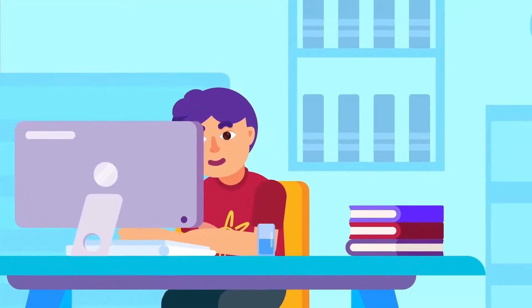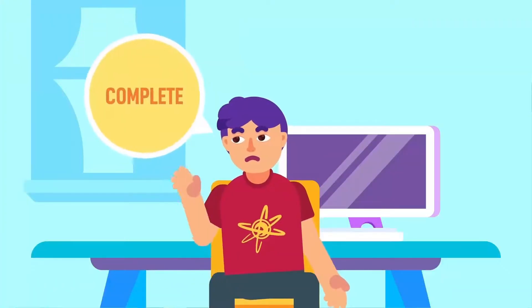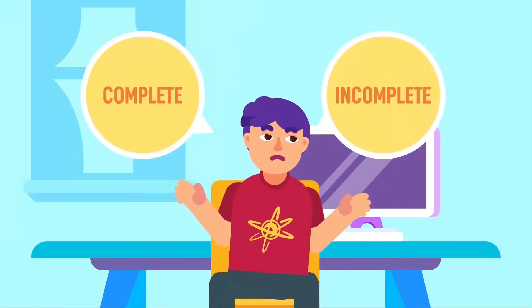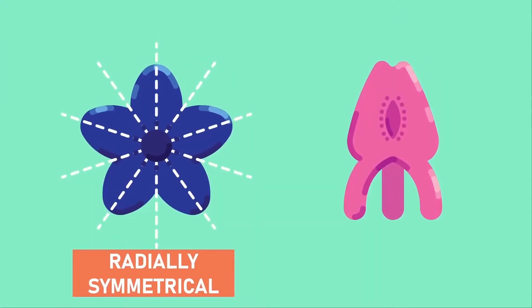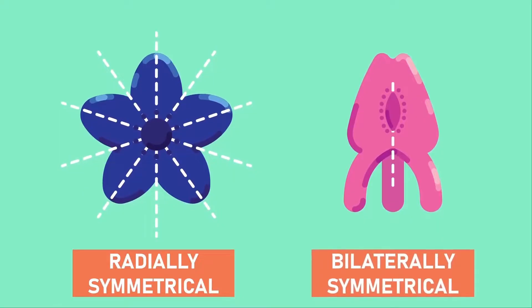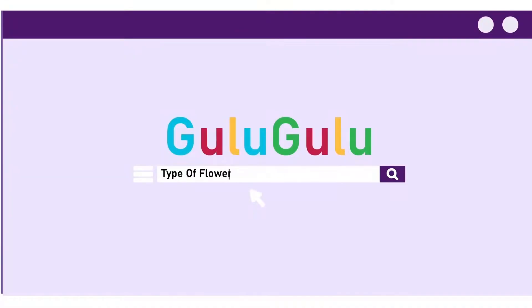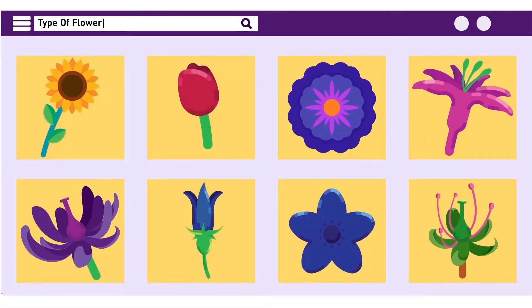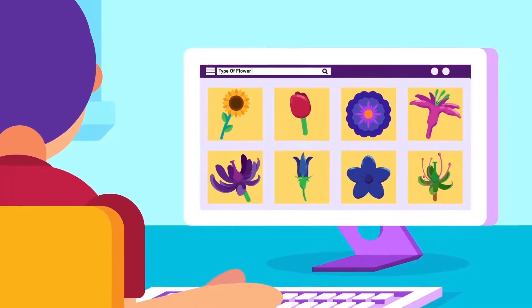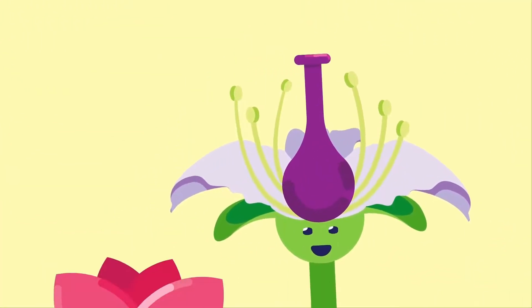You may have heard of flowers being classified using the following pairs of terms: complete and incomplete, unisexual and bisexual, radially symmetrical and bilaterally symmetrical. But what do these words mean? In today's video, we will look at these important terms to understand one of the most fascinating structures of nature — flowers.